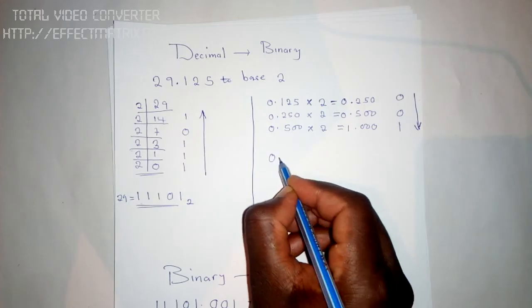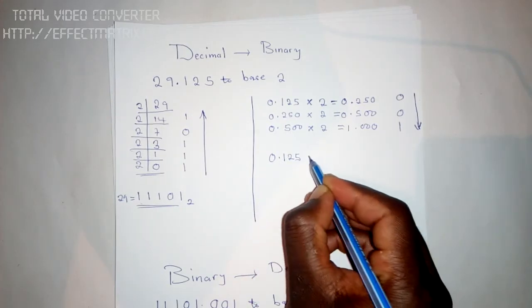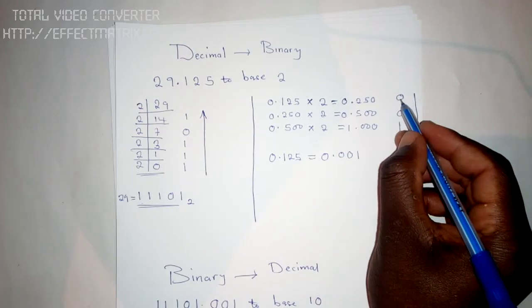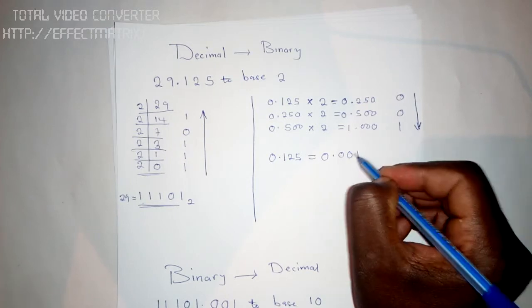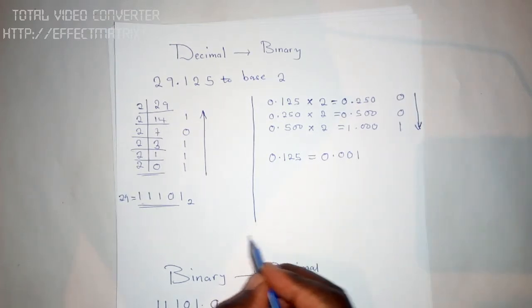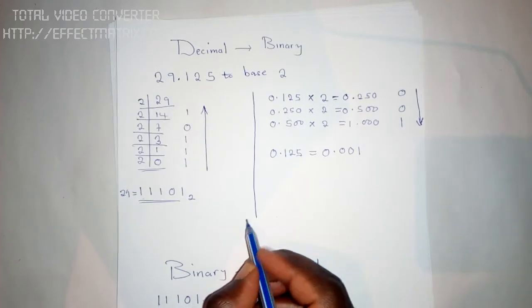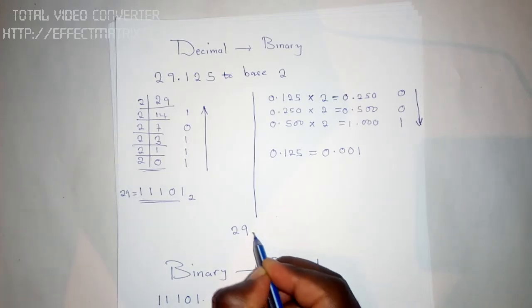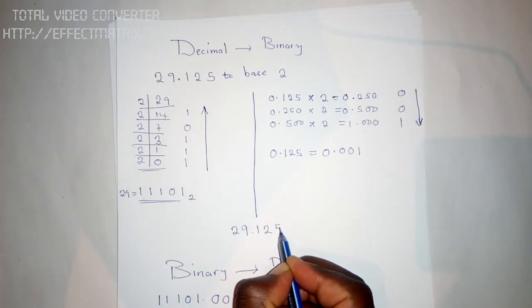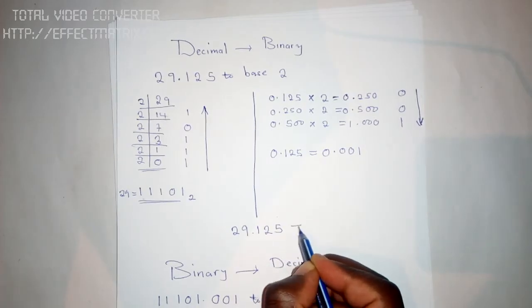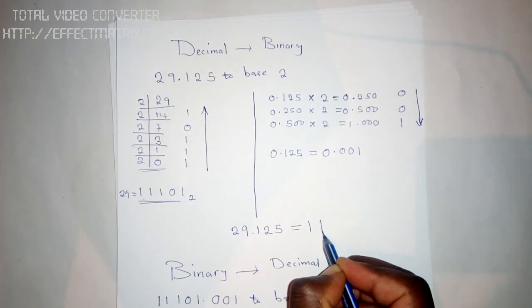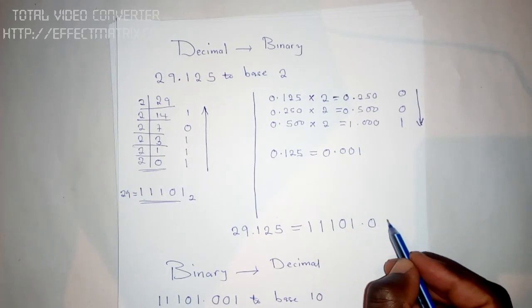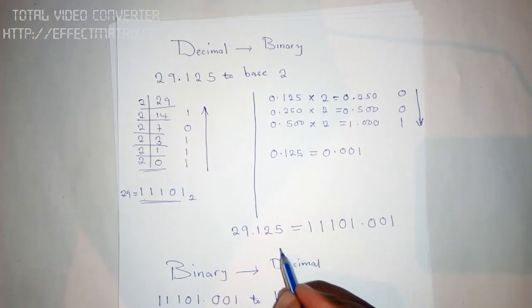So 0.125 is equal to 0.0001. You write them like that. Thereafter, you can now say 29.125 is equal to 11101.0001. This is our answer. We just get this for 29, after writing for 29 you put a point, and after the point you write for 0.125.